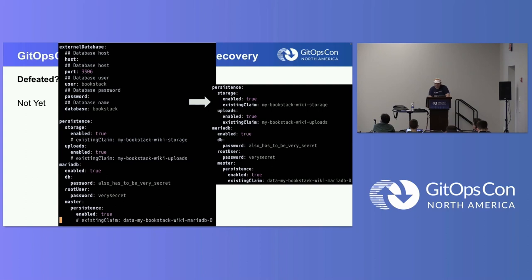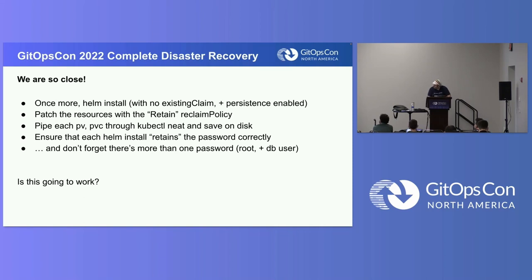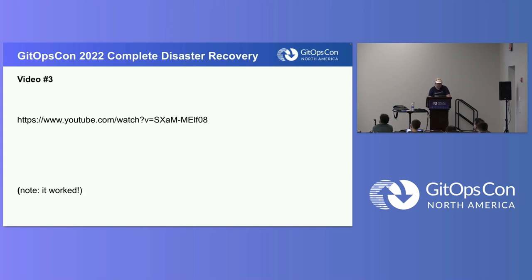We've got a nice collection of values — we're actually going to put them in a values.yaml file. We know we need to set the password. Actually, there are two passwords we need to set, because there's a root user in the database and there's also a regular user. We are going to uninstall and then apply these definitions to the cluster with Helm. Here's our amended list — we've added passwords this time. If you follow the video, this time you know it's working. It took two tries to get that right — the two-password thing tripped me up at least twice.